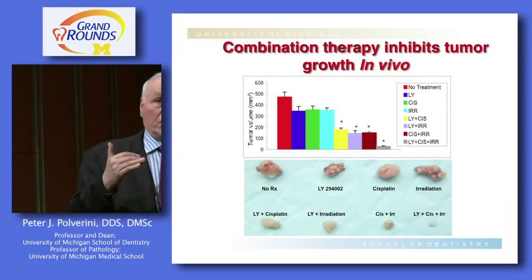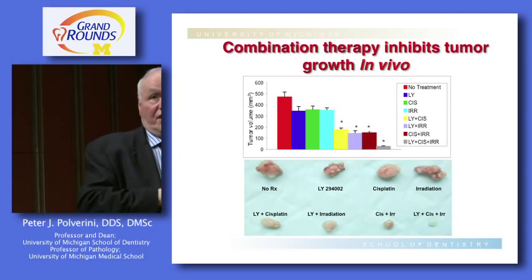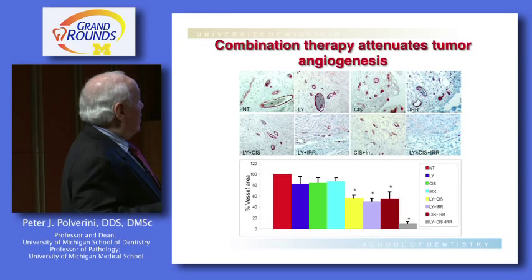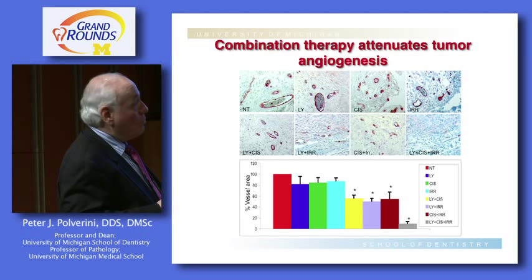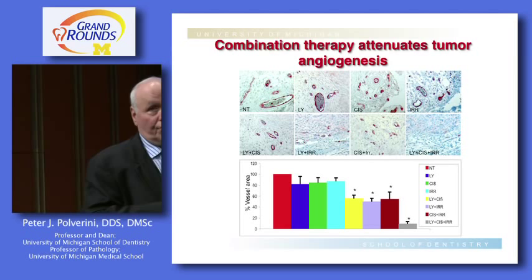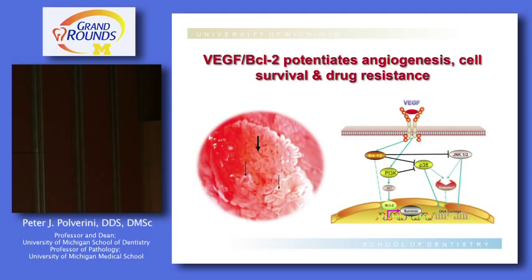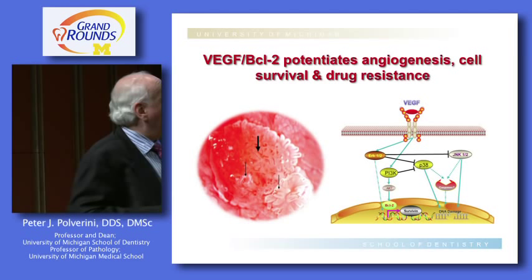In humans, the goal is to minimize side effects. We could also show that this was largely due to suppression of blood vessel growth — looking at untreated tumors versus tumors treated with radiation, cisplatin, and a PI3 kinase inhibitor, we could actually shut down blood vessel growth. The evidence confirmed that vascular endothelial growth factor, through BCL2, potentiates angiogenesis, cell survival, and drug resistance, and that by targeting intermediates we could overcome this resistance phenotype.